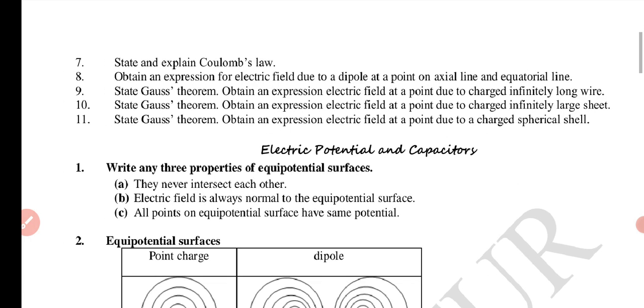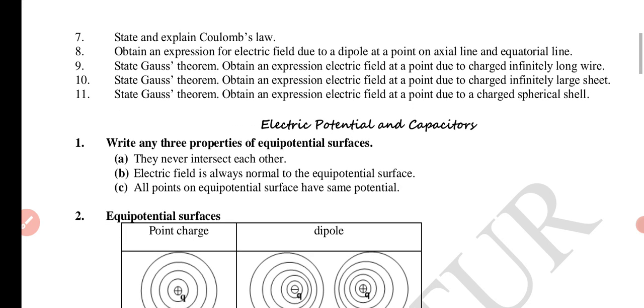State and explain Coulomb's law. Obtain an expression for electric field due to dipole at a moment on axial line and equatorial line. So you can expect 30 to 40 marks easily here. State Gauss theorem, obtain expression for electric field at a point due to charged infinitely long wire, infinitely charged sheet, point due to charge.